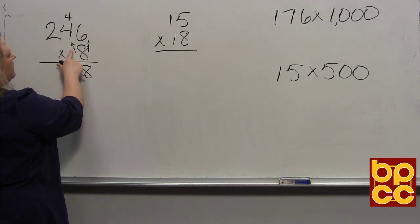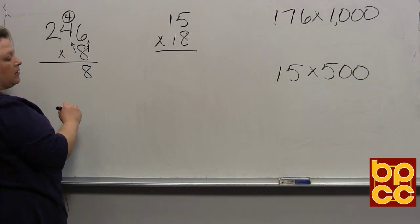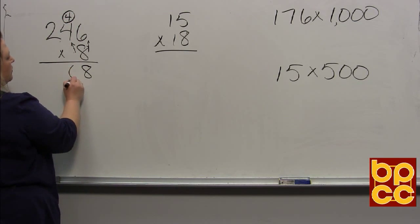Then the next one is 8 times 4. 8 times 4 is 32, plus the 4 makes 36. So we put the ones place down and carry the tens.